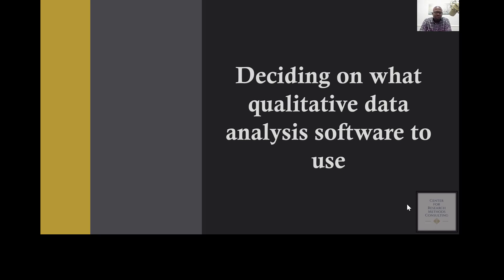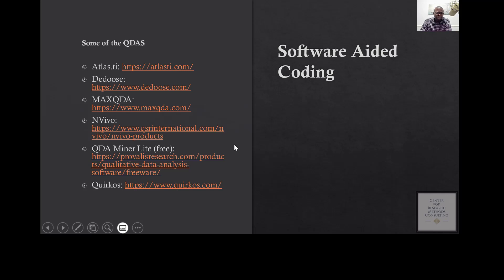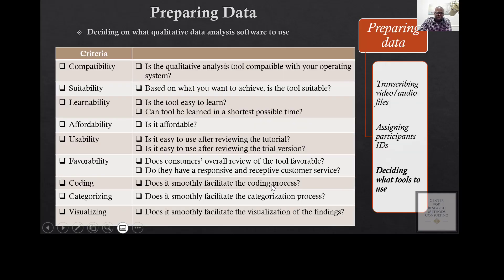Now that you have transcribed your data, cleaned it up, and removed any identifiable information from the transcript, the next step is to decide what kind of software to use — especially if you plan to use a qualitative analysis software. In a previous presentation, I talked about five or six qualitative data analysis software options that are available. There are more available, but these are the popular ones you could use.